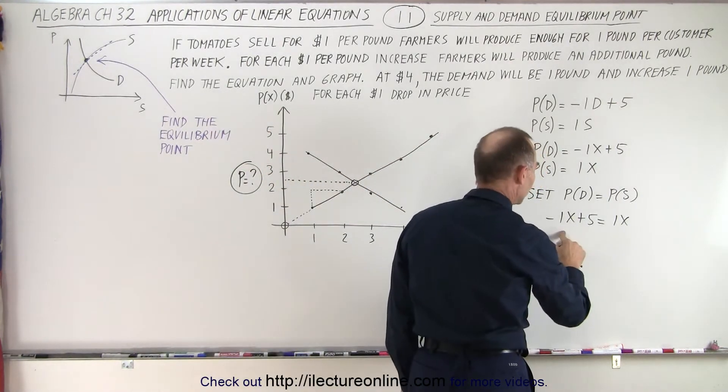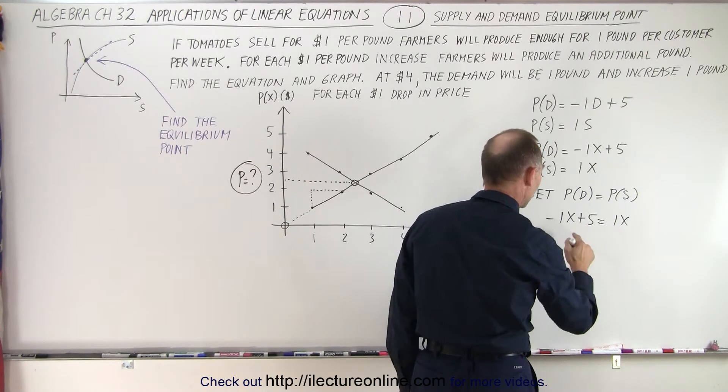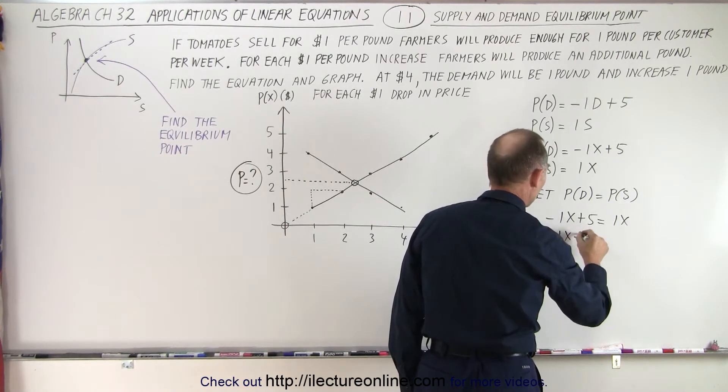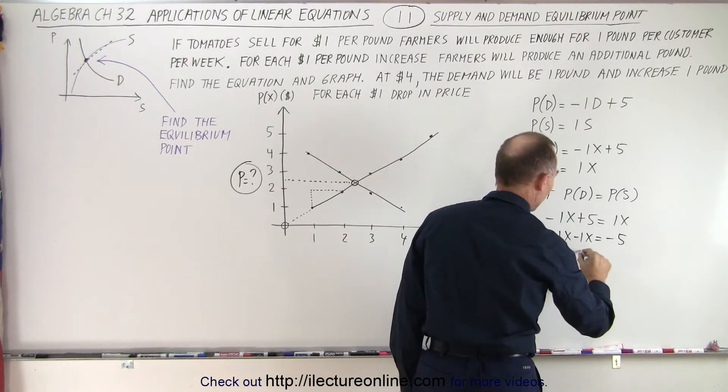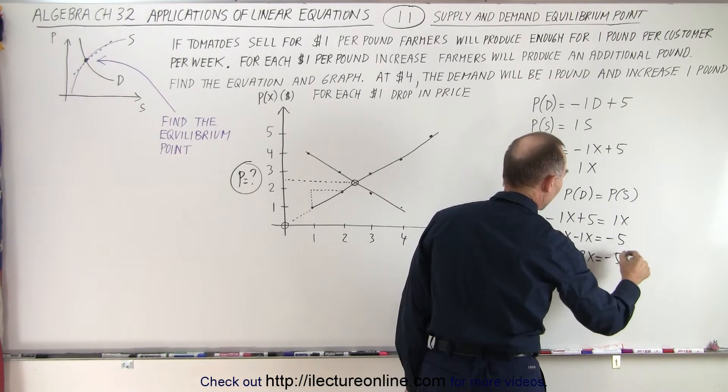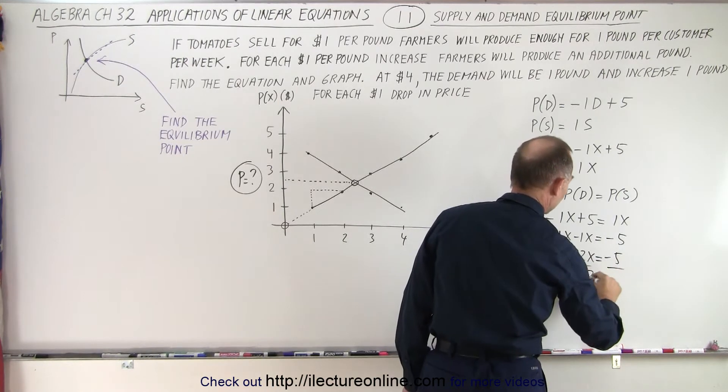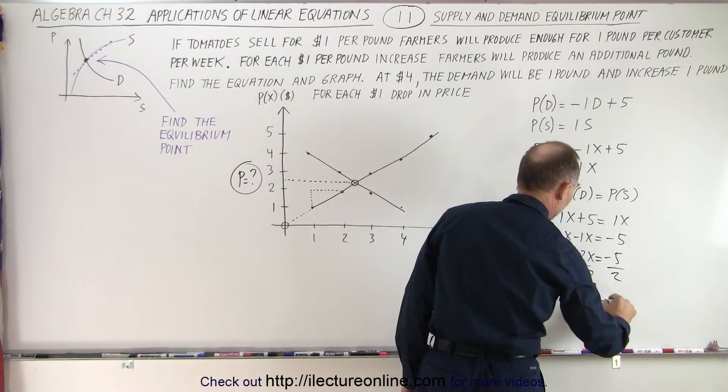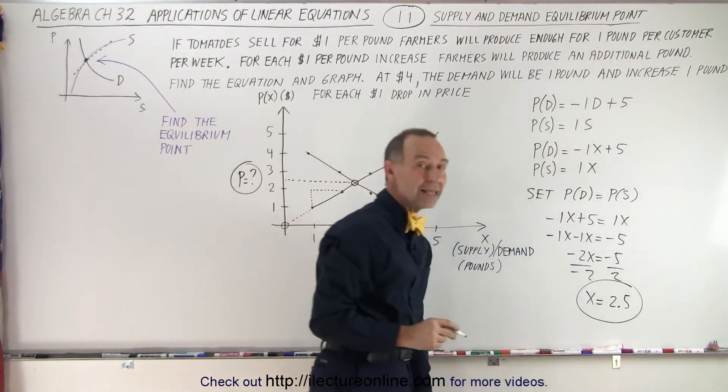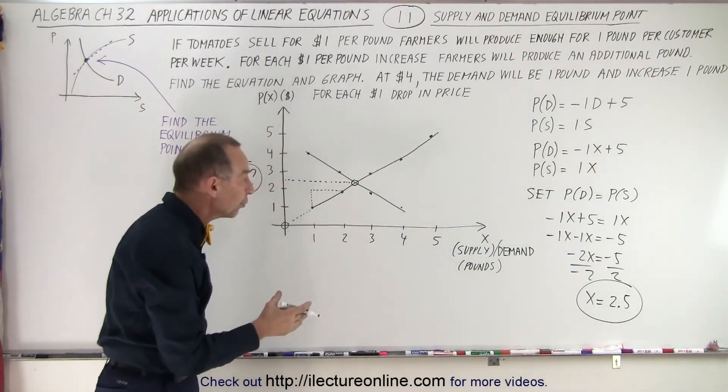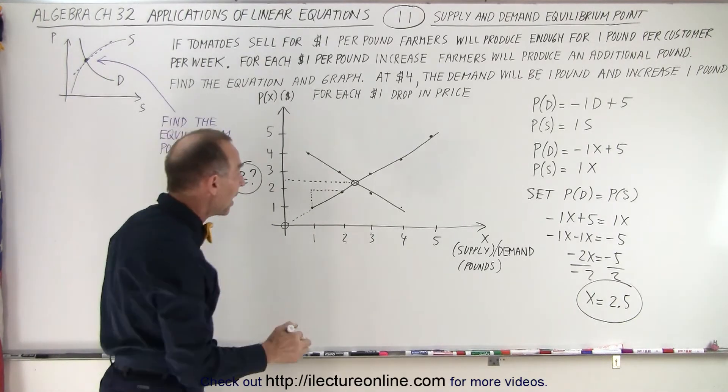So the first thing we're going to do is we're going to move the 1x over here, so minus 1x, minus 1x equals minus 5. We're going to bring the minus 5 across. Minus 2x equals minus 5, and divide both sides by minus 2, we get x equals 2.5. And so that would be the equilibrium point where the supply will equal the demand.